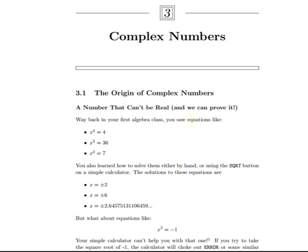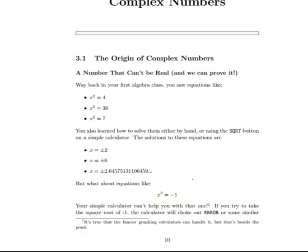What happens is each one of these systems—integers, fractions or rational numbers, and real numbers—as you study them, you find out that there are limitations. In particular, there are equations that you can't solve. For instance, x squared equals 7, you can't solve that if you try to find an x that's a rational number. Similarly, if we have an equation like x squared equals minus 1, and we try to find a solution x that's a real number, it turns out you can't do it.